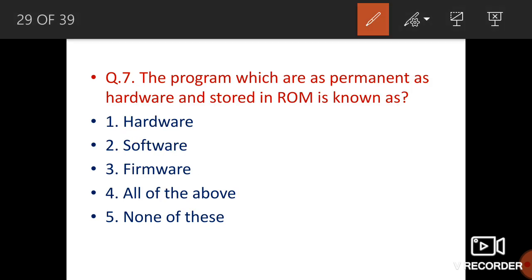Programs that are as permanent as hardware and are stored in ROM — what are they called? Instructions written in read only memory (ROM) cannot be changed. The particular device or part that holds those permanent instructions is called firmware. Remember: programs stored permanently in ROM are called firmware.